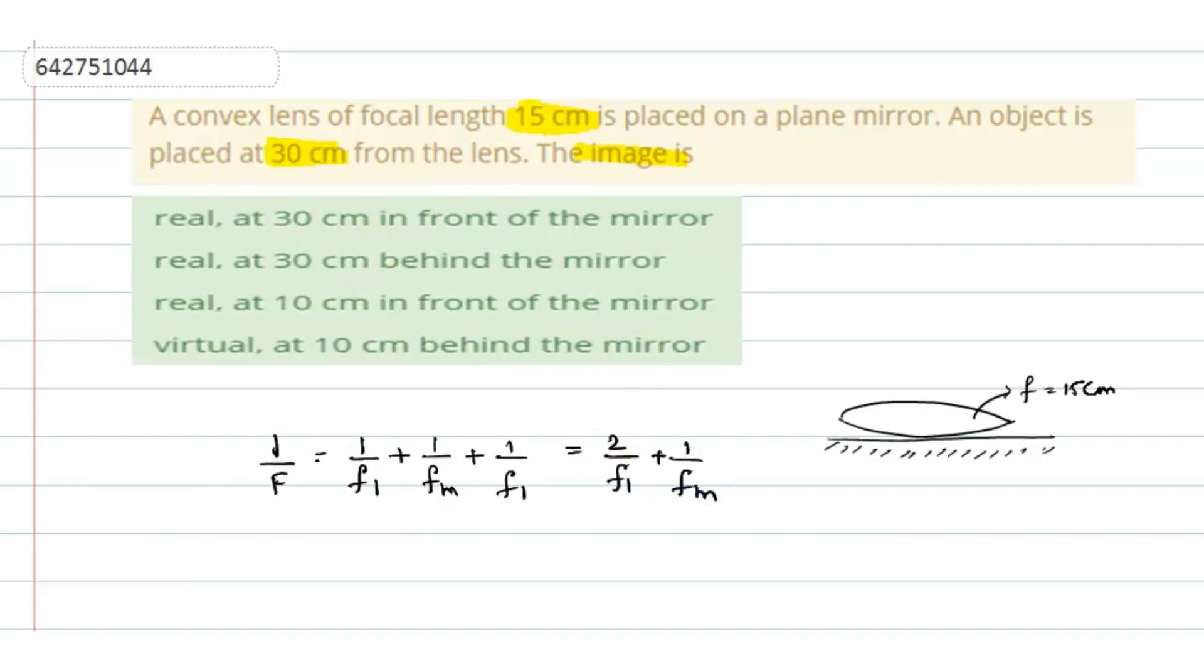So the combination of the focal length is 2 by f1 plus 1 by fm. So the focal length of the plane mirror, we know it is infinity. Focal length of the plane mirror is always infinity.